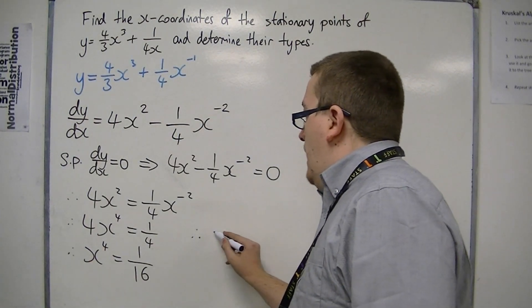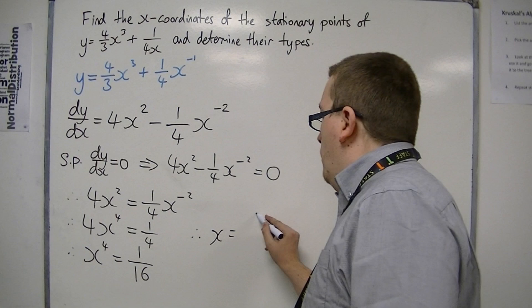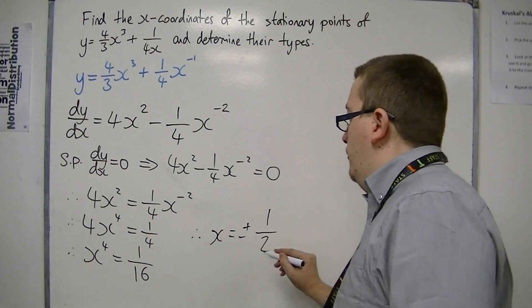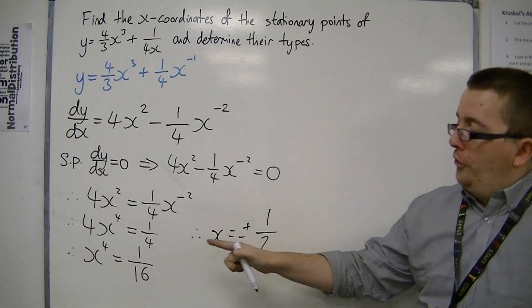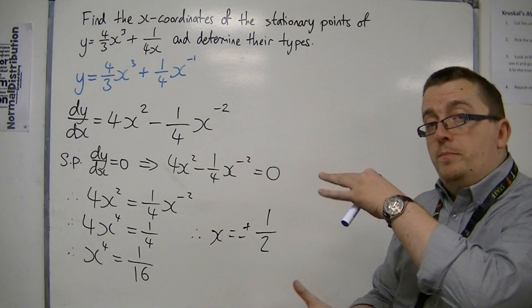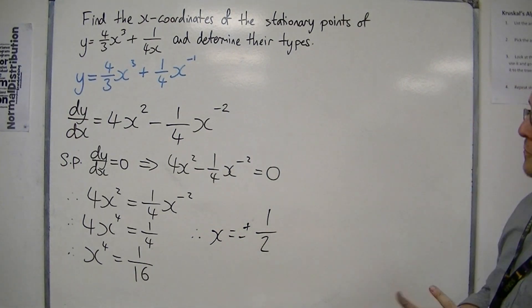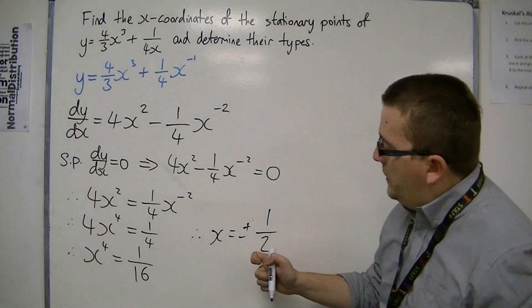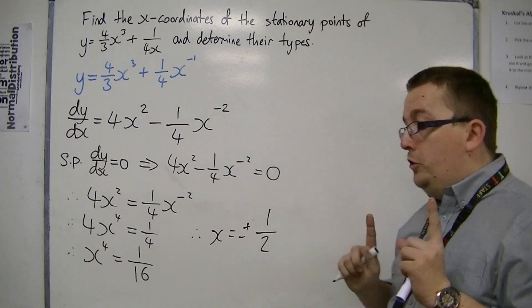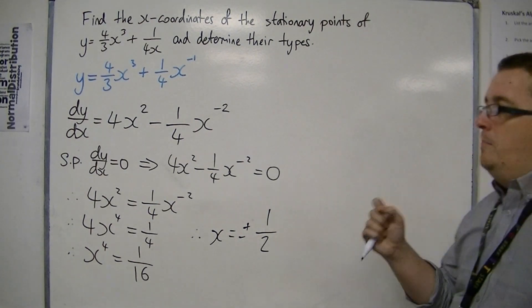And therefore x is equal to plus, I should say plus or minus, 1/2. Because the fourth root of 1/16 is 1/2, but because it could be plus or minus, I must include both. And so these are the x-coordinates of the stationary points. There are 2, one at 1/2 and one at -1/2.